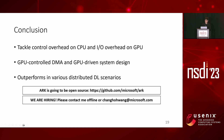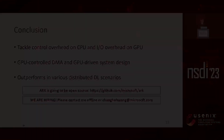In this work, we claim that inter-GPU communication needs to tackle the control overhead on CPU and the I/O overhead on GPU. As a solution, we present ARC, which proposes GPU-controlled DMA and a GPU-driven system design. ARC outperforms baseline systems in various distributed deep learning scenarios, up to 2.1 times for training and 3.5 times for inference. ARC is going to be open source shortly. We are also hiring — please contact me offline or through email. Thanks for listening.